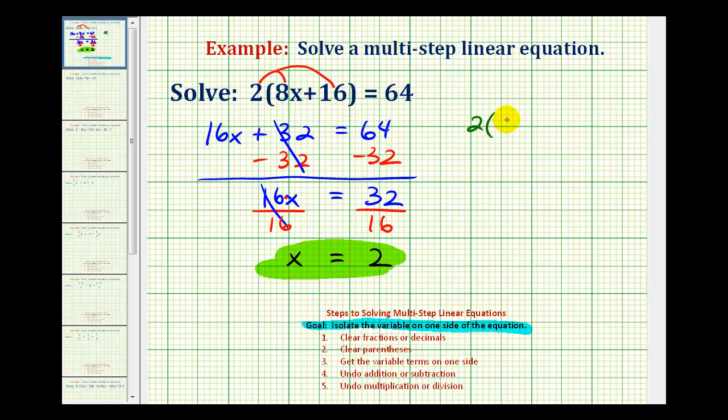So in parentheses, we'll have eight times two plus 16 equals 64. We'll simplify inside the parentheses first. Well, eight times two is 16, and 16 plus 16 is 32.